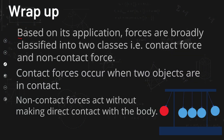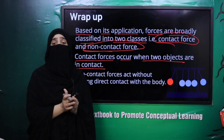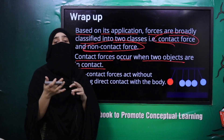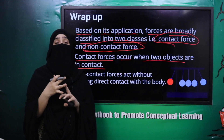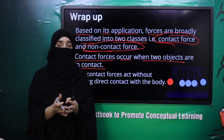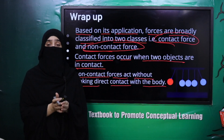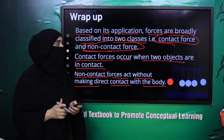Let's wrap up the lecture. Based on its application, forces are broadly classified into two classes: contact force and non-contact force. Contact forces occur when two objects are in contact. Force is divided into two types based on how it is applied. Contact forces: when there is a connection or interaction between the two objects applying force, that is contact force. Non-contact forces act without making direct contact with the body — they are applied without any direct connection or interaction.